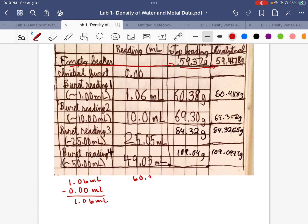minus the mass of the empty beaker, 59.37. And when we subtract that, we end up with 1.01 grams.